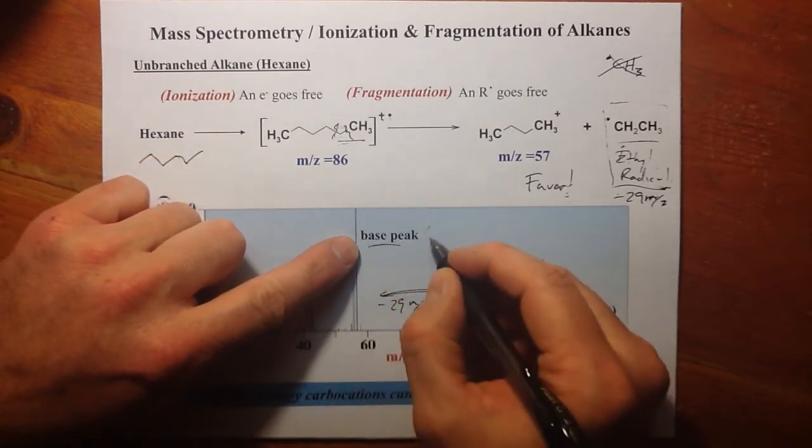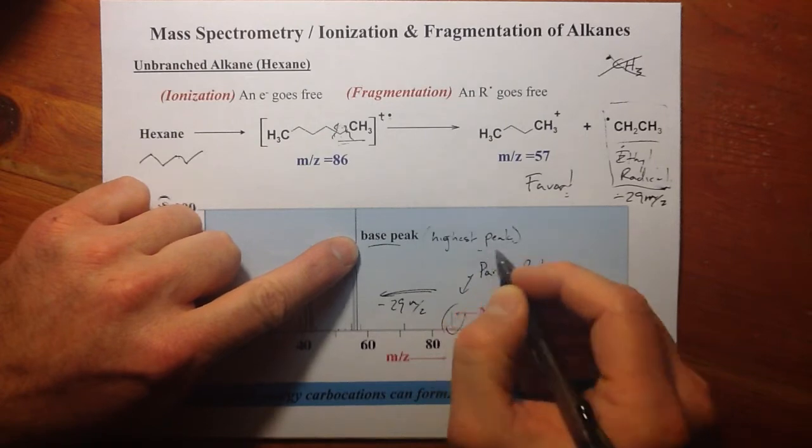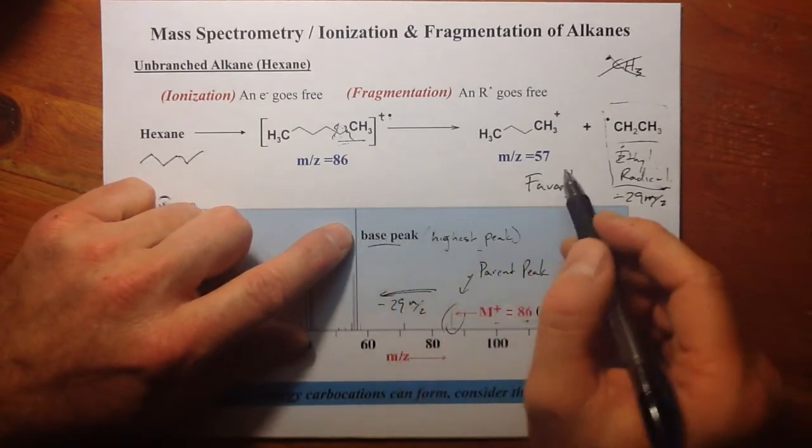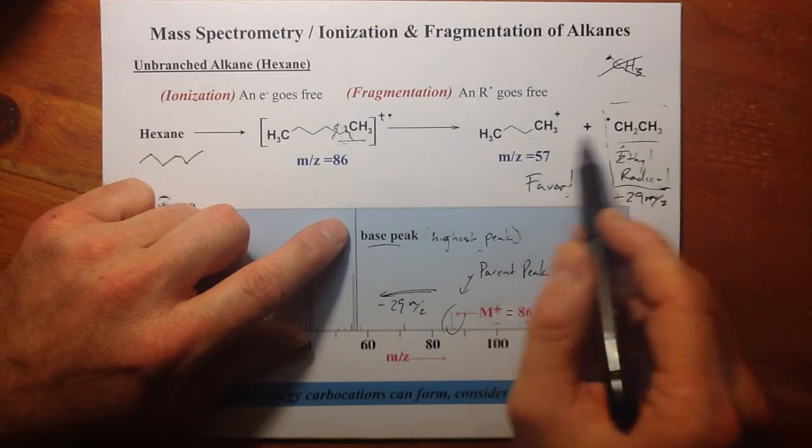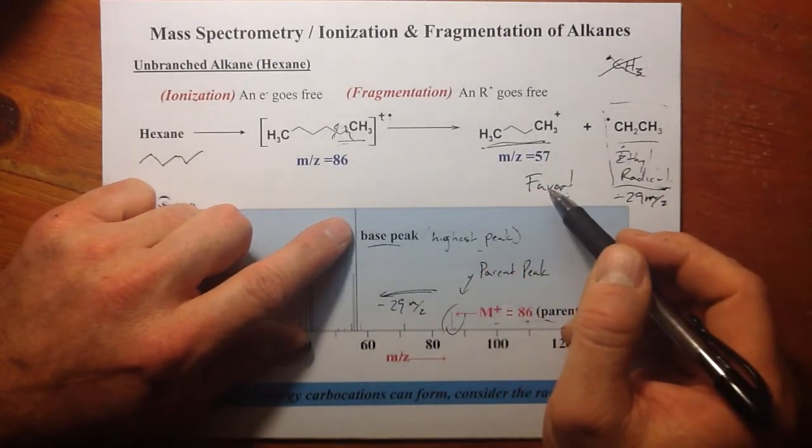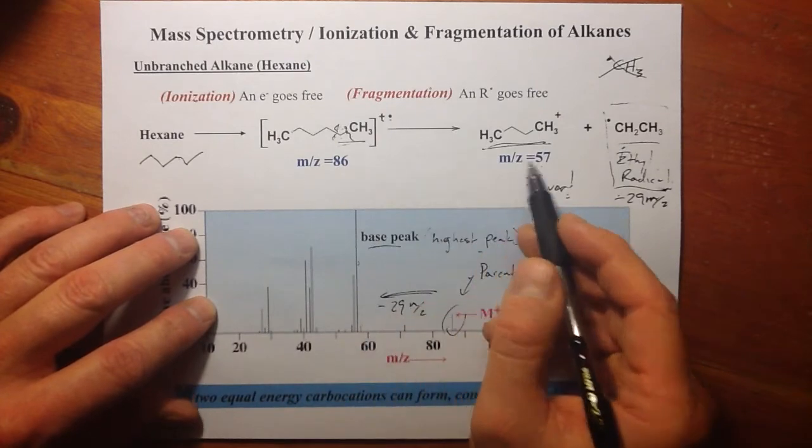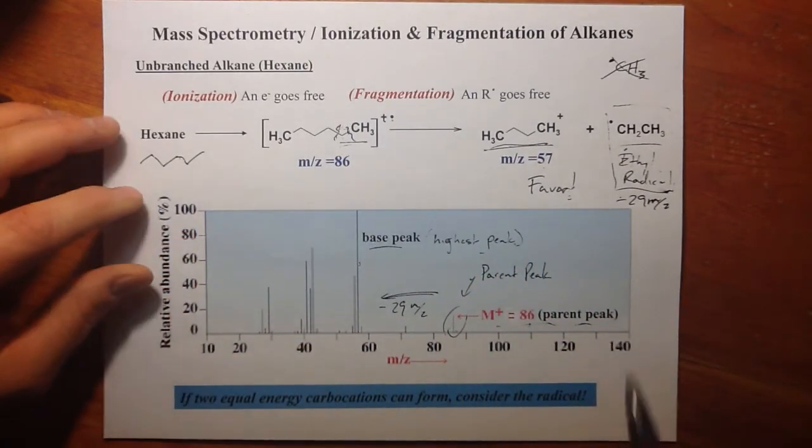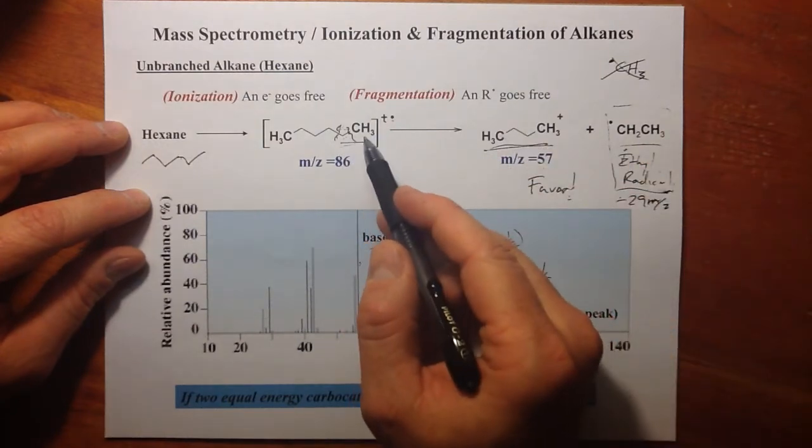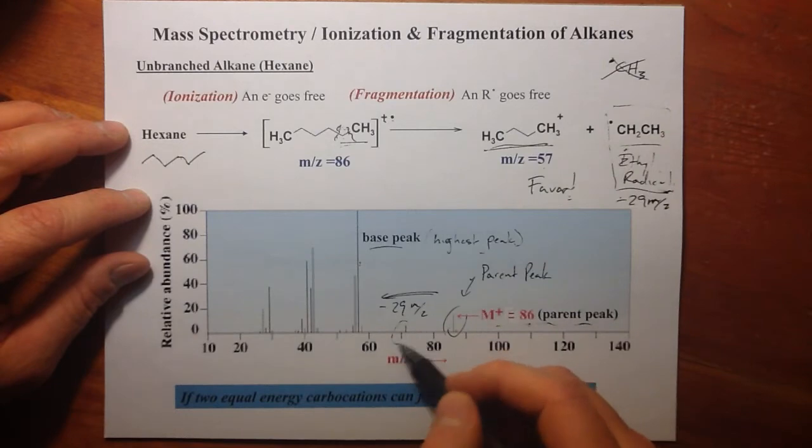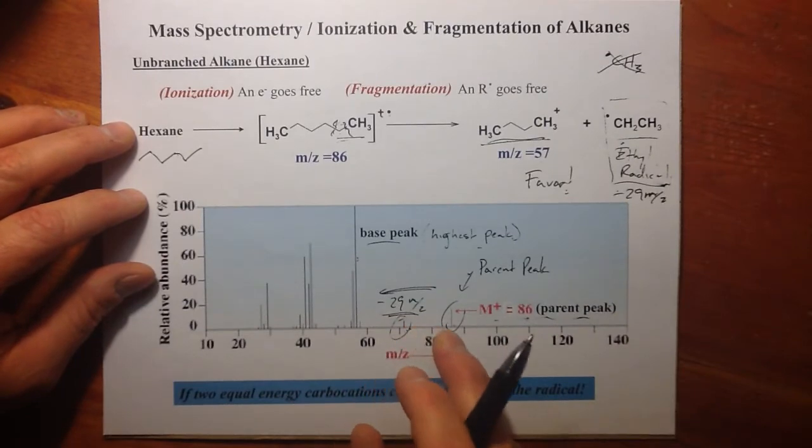But we have minus 29 M/z's down from that. We see our, and I guess should define what base peak is. That's just our highest peak. Highest peak is always called the base peak. That base peak represents the fragment that's generated here, the butyl cation, not the radical. We don't see that, but we just know that that's what's kicked off to generate this butyl cation. This is our fragmentation peak, not our molecular ion peak. That is representing the butyl cation, because it's a favored cation formed, considering the favored radical that would be generated along with it. We see a little bit of that here, but minus 29 is fragmentation. Minus 29 M/z's as a fragmentation is favored.